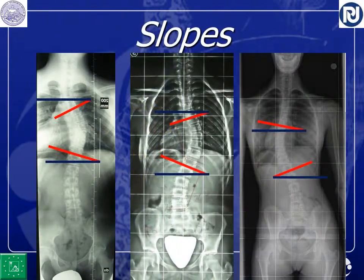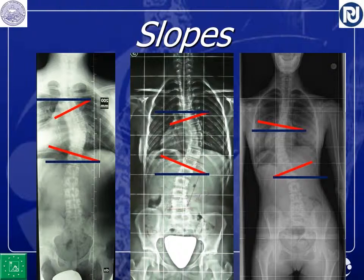If you look at these three examples, you can see that here the slope is much less than here; here the slopes are quite similar; and here the slope is much higher than here. What does this mean? I think it carries important information.